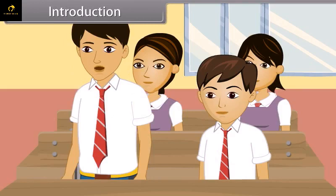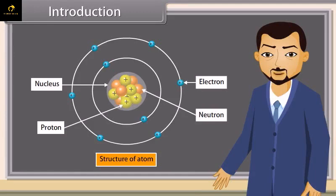A student asks: all objects around us are made up of different materials, so how is it possible that atoms are the fundamental units of matter? All objects are made up of different materials like plastic, rubber, iron, etc. They have different arrangements and types of molecules, and a molecule is a group of two or more atoms. So the fundamental unit is the atom.